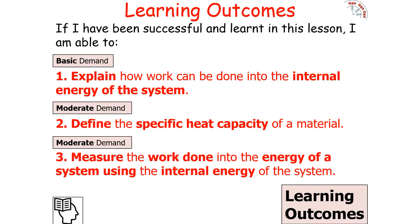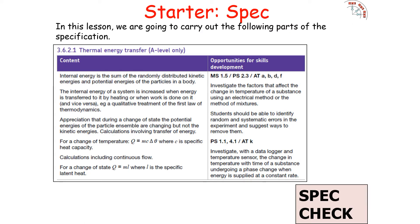If we've been successful and learned in today's lesson, we should be able to explain how work can be done into the internal energy of a system, define the specific heat capacity of a material, and look at ways to measure the work done into the energy of a system. We're going to look at AQA A-level physics specification 3.6.2.1, thermal energy transfer.